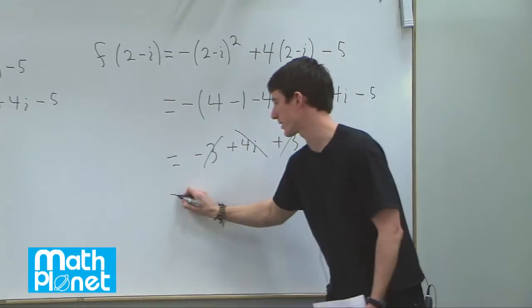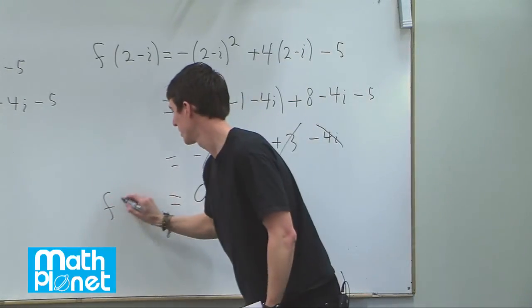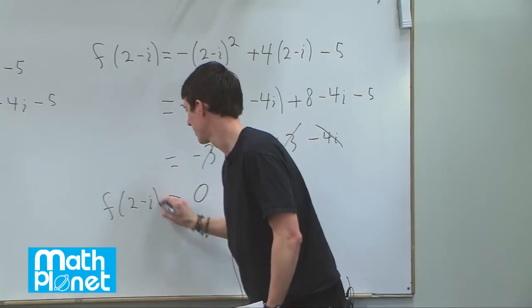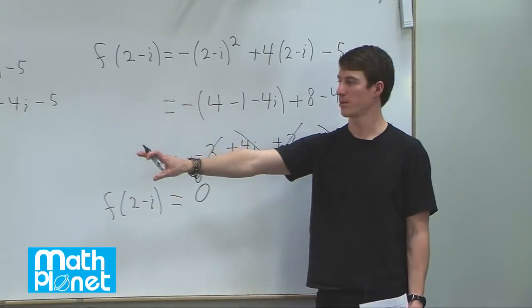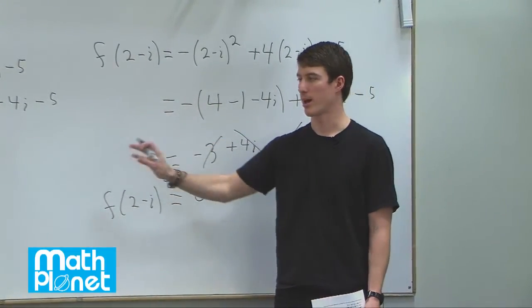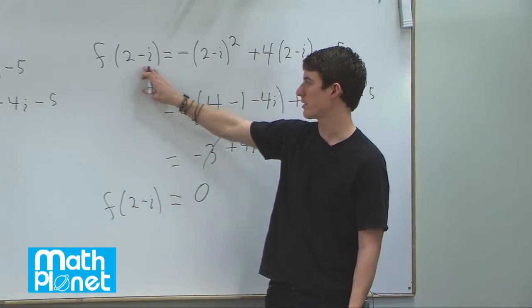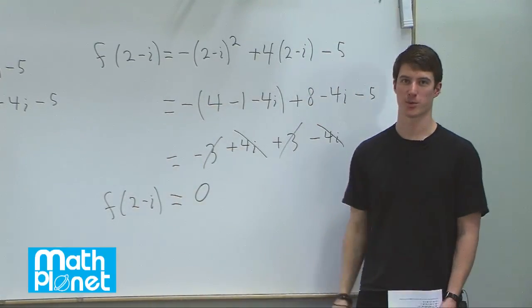So this does, in fact, evaluate to give us 0 again. So for this original function, we evaluated at some value that we saw was a 0. We found the conjugate of that evaluated, and sure enough, it's also a 0.